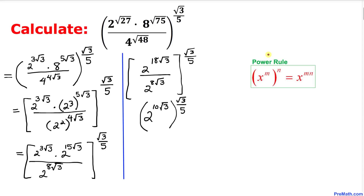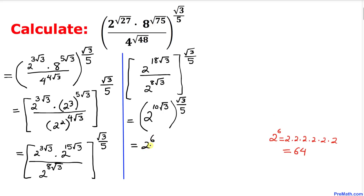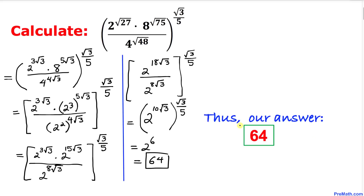Finally, we use the power rule once more and multiply the two nested exponents together. 5 goes into 10 twice, and square root of 3 times square root of 3 gives us 3. So 2 times 3 gives us 6, meaning the expression simplifies to 2 power 6. Since 2 multiplied 6 times equals 64, our final answer is 64.